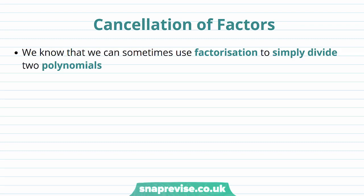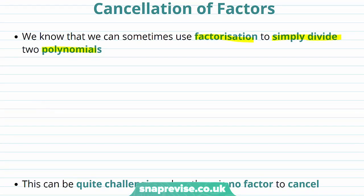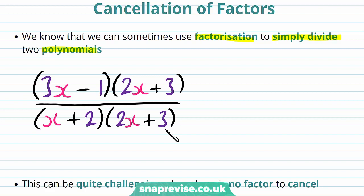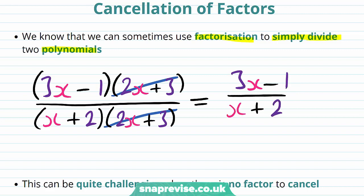So how can we extend the process of cancellation of factors? We know that we can sometimes use factorization to simply divide two polynomials. Let's say we have in factorized form (3x − 1)(2x + 3) all divided by (x + 2)(2x + 3). Then we are able to cancel the (2x + 3) from the top and the bottom, leaving us with (3x − 1) over (x + 2).